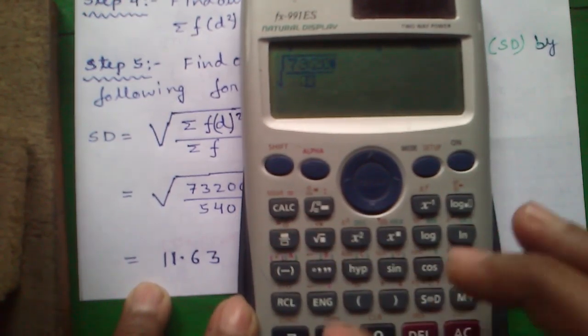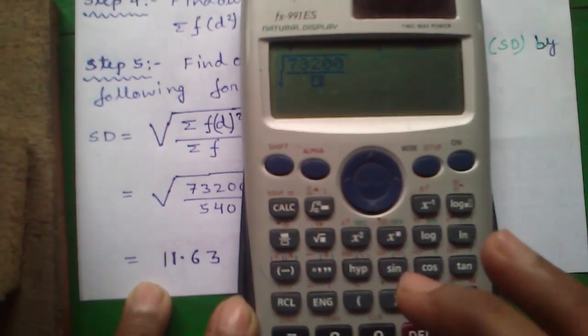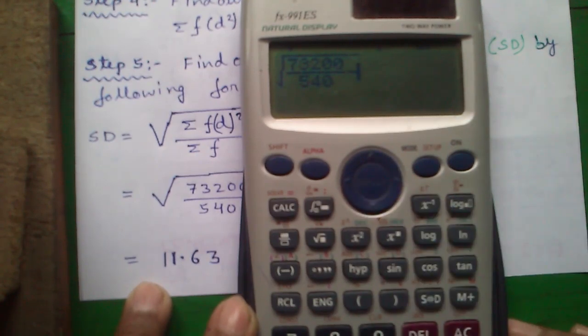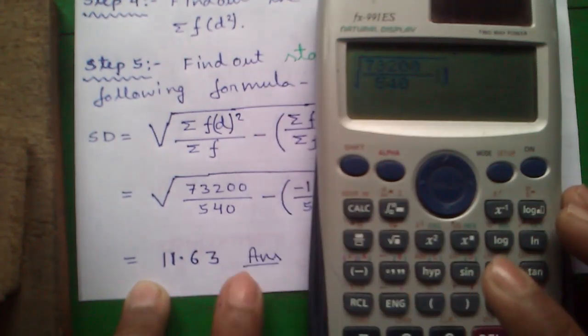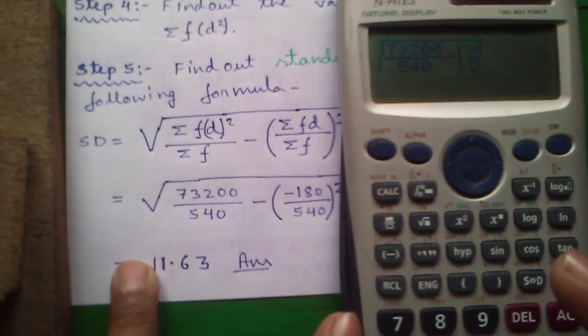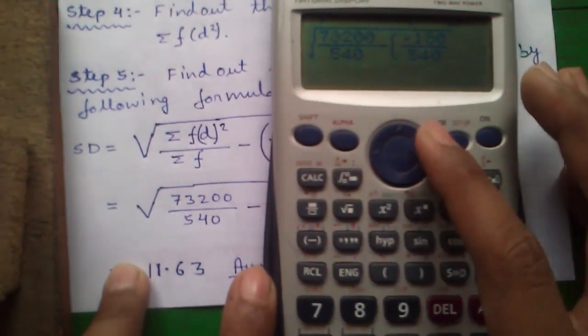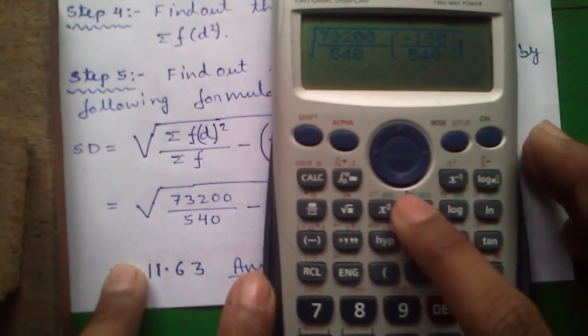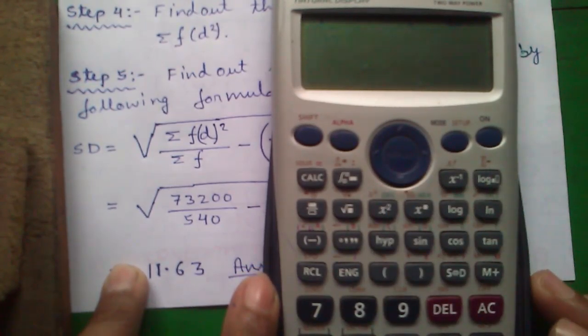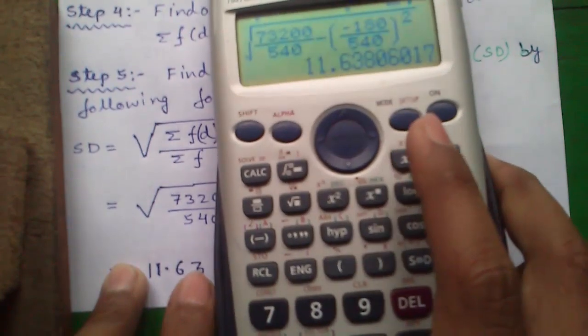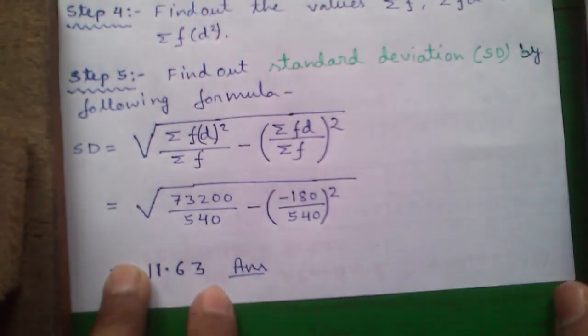73,200 divided by 540 minus again fraction. First bracket. Fraction minus 180 divided by 540. Bracket close whole square. This equals to which is 11.63 which is our answer.